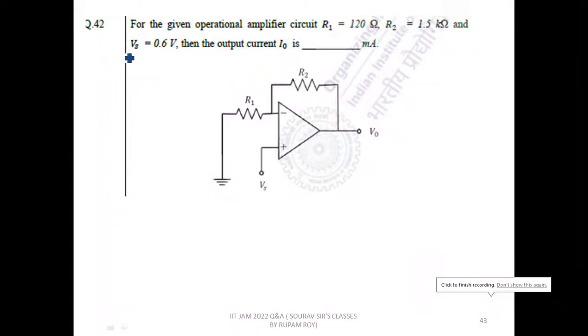This is question 42 from IIT JAM 2022. For the given operational amplifier circuit, R1 is 120 ohm, R2 is 1.5 kilo ohm, that is equal to 1500 ohm, and Vs is 0.6 volt. Then the output current i0 is blank milliampere, so you have to calculate the output current in milliampere.